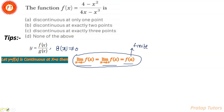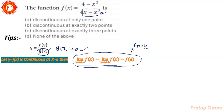तो आईए अब इस question को solve करते हैं। सबसे पहले समझते हैं कि discontinuous points का मतलब क्या होता है। Basically discontinuous point वो point होता है जिस पर हमारा function defined ही न हो। और कोई भी function defined तभी होता है जब इसकी denominator 0 के equals नहीं होती। तो हमें वो points calculate करने हैं जहाँ function defined नहीं है — इसके लिए denominator को 0 के equals करना होगा।